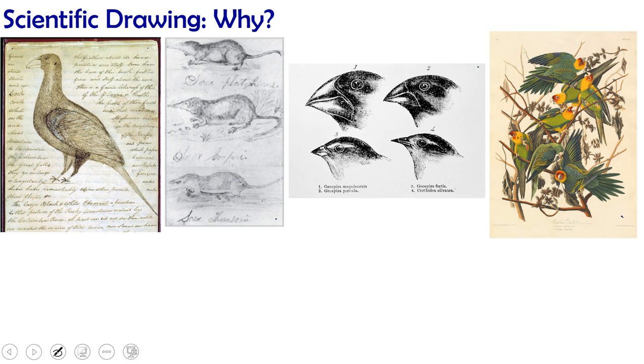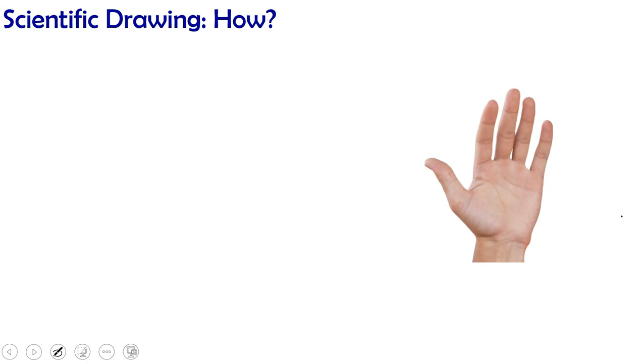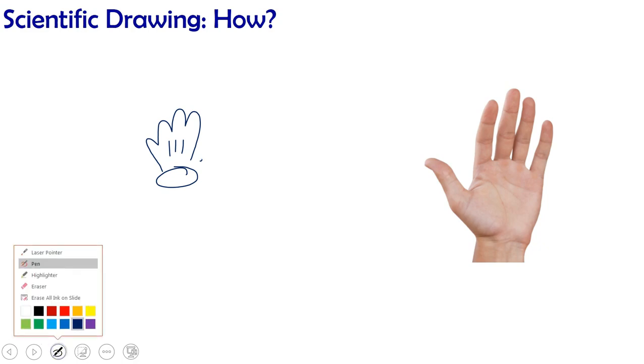So how do we do scientific drawing? And I will tell you that even if you call yourself not a good artist, you can do scientific drawing. So let's talk about how. Let's say I wanted to do a scientific drawing of this hand. I might look at this hand and say, okay, I know how to draw a hand. Hand scientific drawing done. And you'd all say, no, that's not right. Okay, so the first rule of scientific drawing is to draw what you see. My drawing here was not, I wasn't looking at that other hand while I was drawing it. So rule number one, draw what you see.